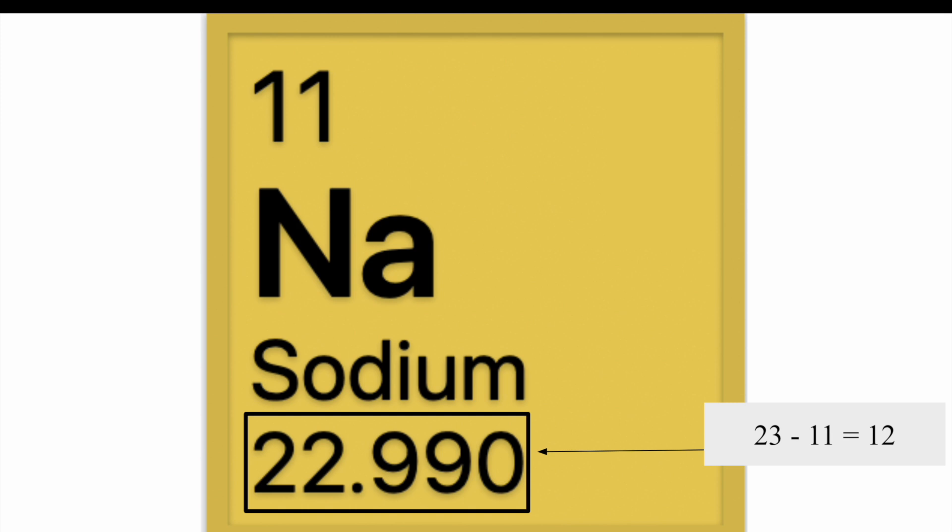Let's look at sodium. Sodium on average has an amu of 23 amu. Sodium always has 11 protons because sodium's atomic number is 11. So 23 minus 11 is 12. So on average sodium has 12 neutrons.